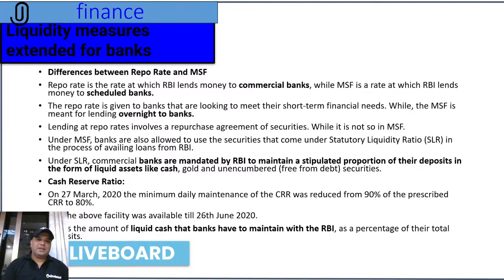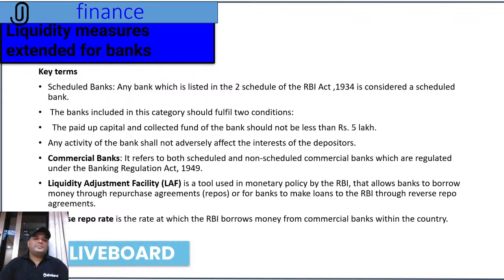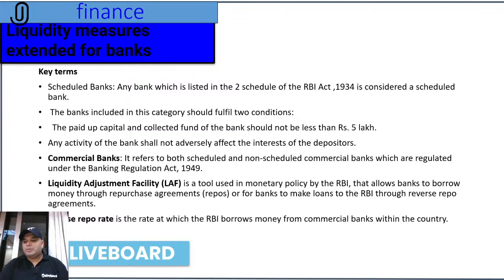A scheduled bank is any bank listed in the Second Schedule of the RBI Act 1934. Two conditions apply: the paid-up capital and collected funds should not be less than 5 lakh rupees, and no activity of the bank shall adversely affect depositors' interests. Commercial banks refers to both scheduled and non-scheduled commercial banks regulated under the Banking Regulation Act of 1949. The Liquidity Adjustment Facility (LAF) is a tool used in monetary policy by the RBI that allows banks to borrow money through repurchase agreements or to make loans to the RBI through reverse repo agreements. The reverse repo rate is the rate at which RBI borrows money from commercial banks.